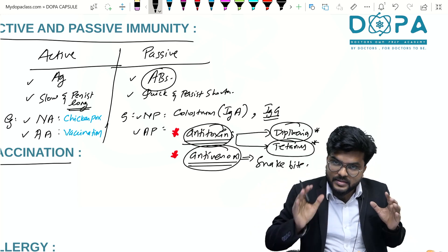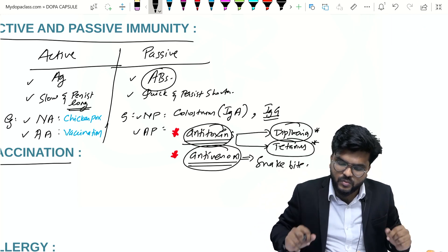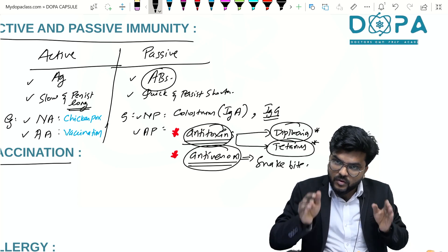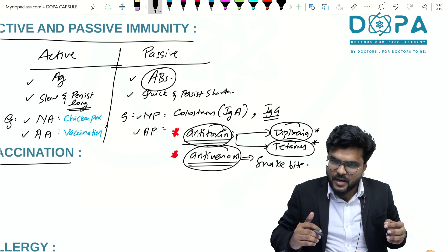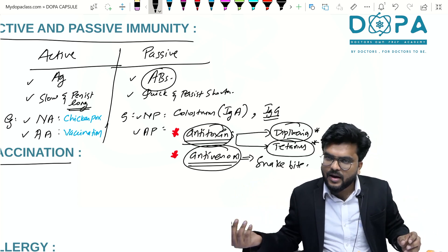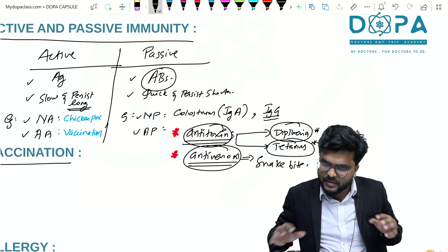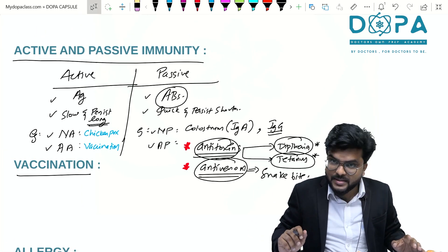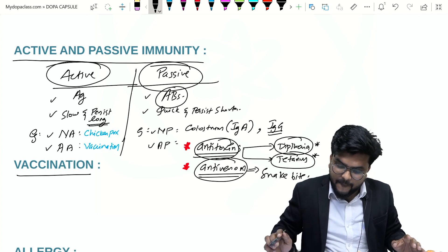In antitoxin and antivenom administration, we are directly injecting antibodies against the incoming antigen. This persists for that particular purpose only. If the same individual gets a snake bite another time, we have to administer antivenom again. Hope you got a clear idea on the basic difference between active and passive immunity.